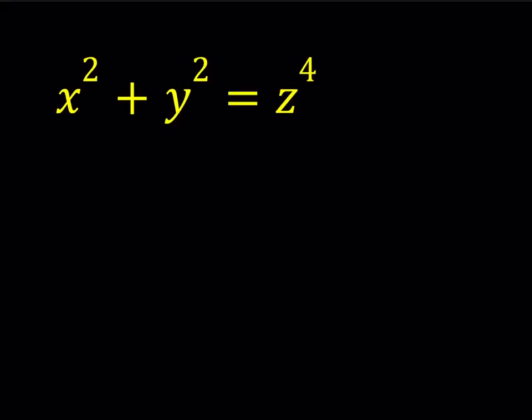Hello everyone. In this video we're going to be solving a Diophantine equation: x squared plus y squared is equal to z to the fourth power. This is a pretty interesting equation because if you had z to the second power, this would be the Pythagorean theorem, or if you had just fourth powers, then it would look like Fermat's last theorem — at least the n equals 4 case. But it's neither one, so it's a pretty interesting equation, and this equation has solutions.